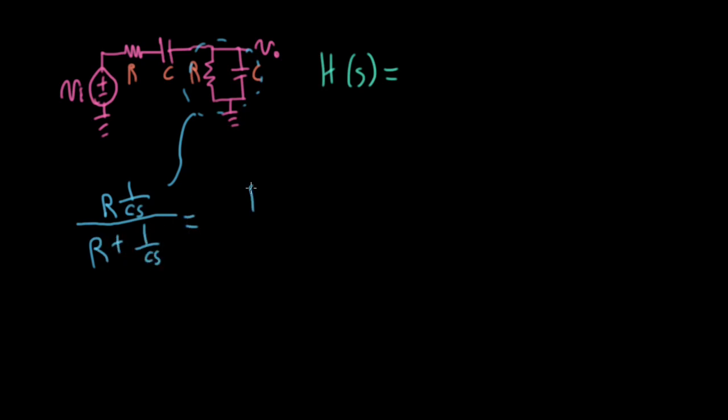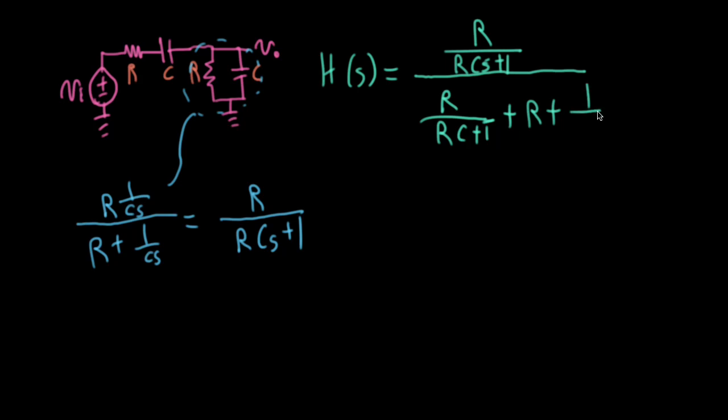I want to clear out that fraction to make my life a little easier, so I'll write this as R over RCs plus 1. So over here, when I write this voltage divider, I'll have R over RCs plus 1, and then down here, I'll have R over RCs plus 1 plus R plus 1 over Cs from that series combination.